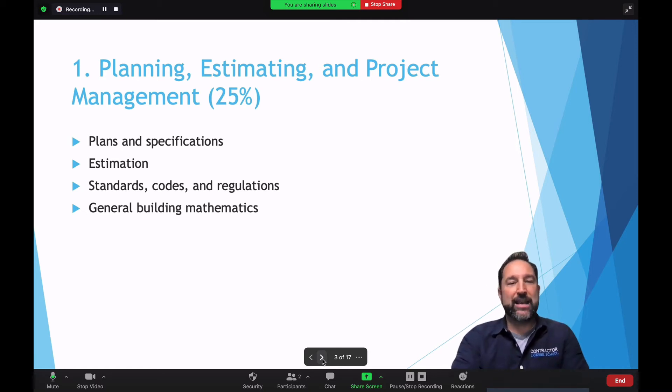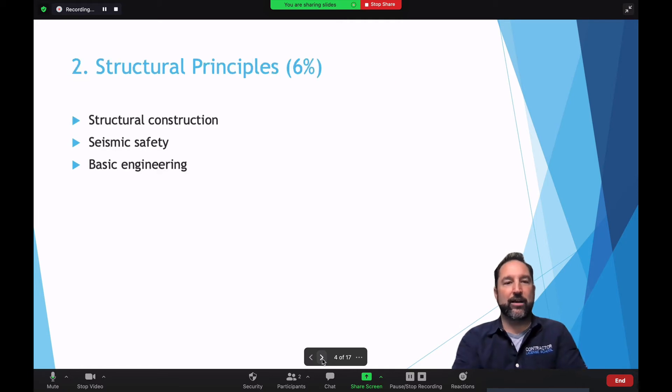So what's that next component here? Well, let's take a look. Well, number two is the structural principles. Now structural principles, as you can see here, make up 6% of what's going to be on the state exam. That's things like structural construction, seismic safety, basic engineering. So those components you'll need to know about.